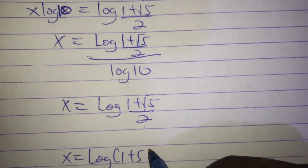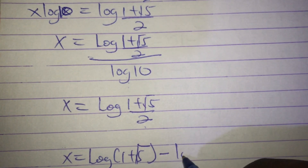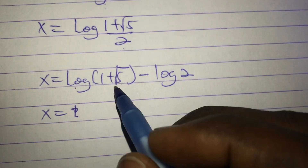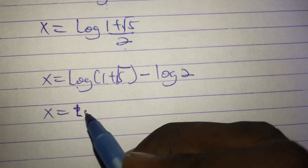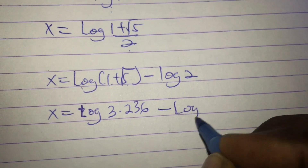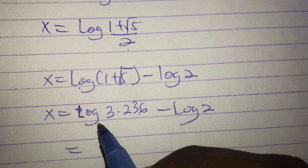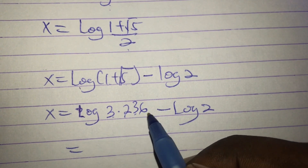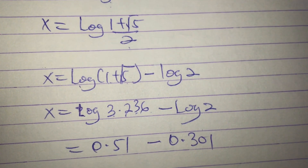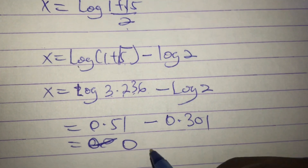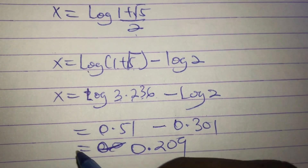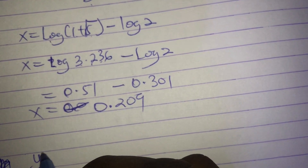Now computing numerically: 1 plus root 5 is approximately 3.236, so log(3.236) is approximately 0.510. Then x equals 0.510 minus 0.301, which gives x approximately equal to 0.209. This is the first value of x.